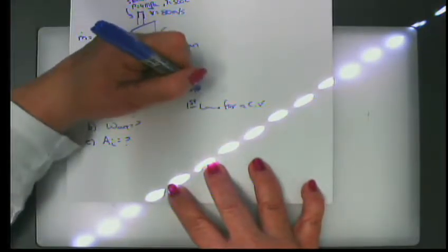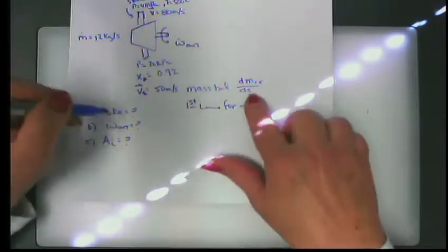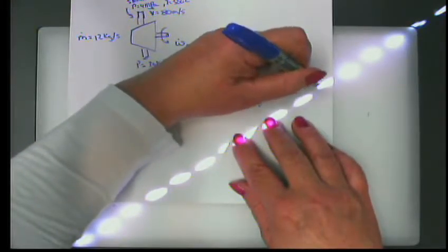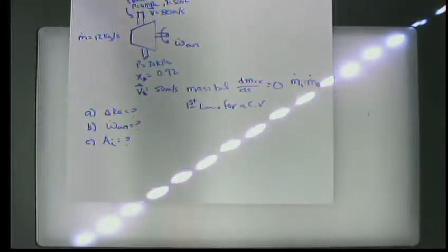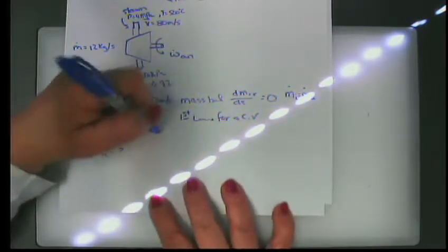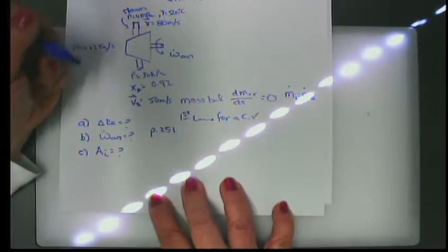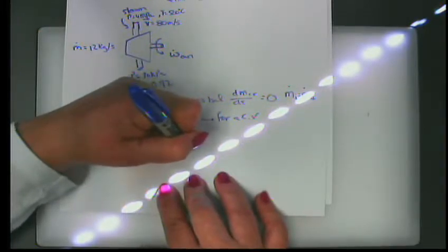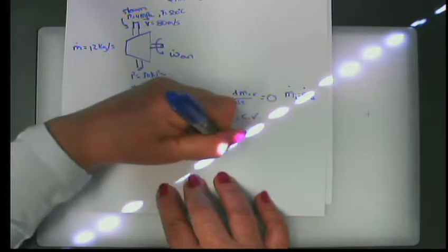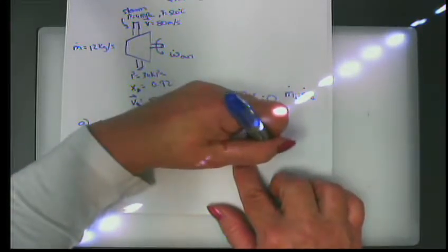Since it's a turbine, dM_CV/dt equals zero. We have one inlet and one outlet, so the mass flow rate in equals the mass flow rate out, which is given in the problem. Referring to the first law of thermodynamics for a steady flow problem, I'll write it out completely and then eliminate terms that are not applicable.